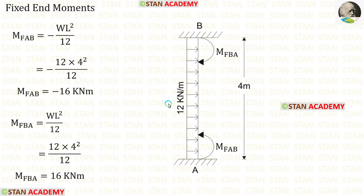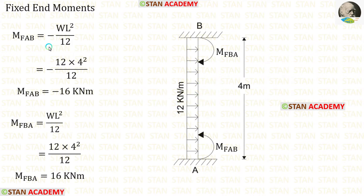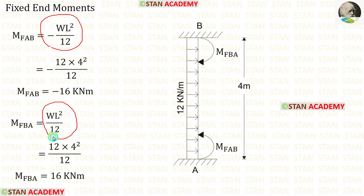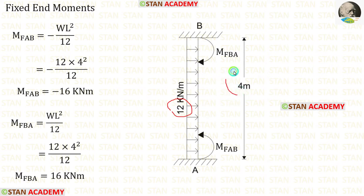Now let us find the fixed end moments in column AB. In column AB there is a UDL of 12 kN per meter acting for the full span. The formulas for the fixed end moments are minus WL squared upon 12 and positive WL squared upon 12. Here W is 12 and L is 4. When we apply these values in the formulas, we get M of AB and M of BA.